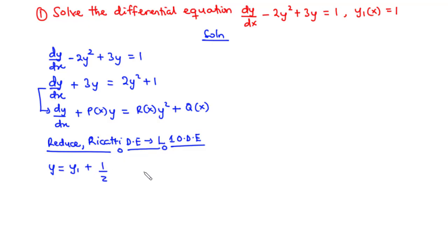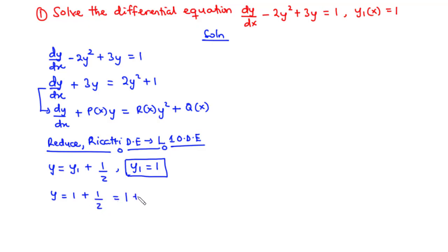We are given the particular solution y1 = 1, so the substitution becomes y = 1 + 1/z, which can also be written as y = 1 + z⁻¹. We will now find the derivative of this expression and substitute both y and dy/dx into the Riccati differential equation.